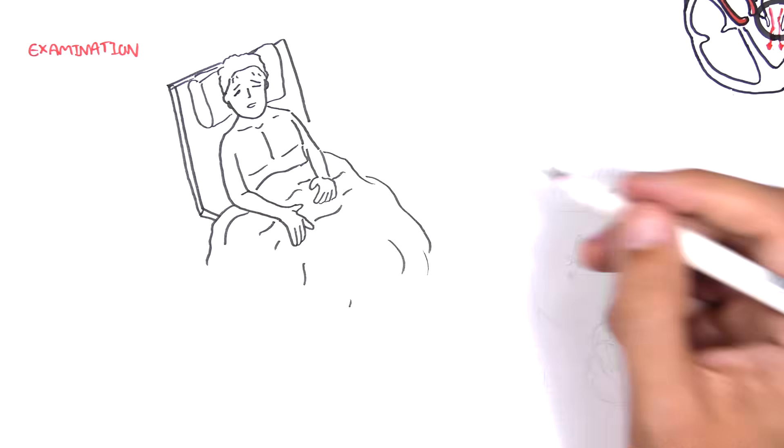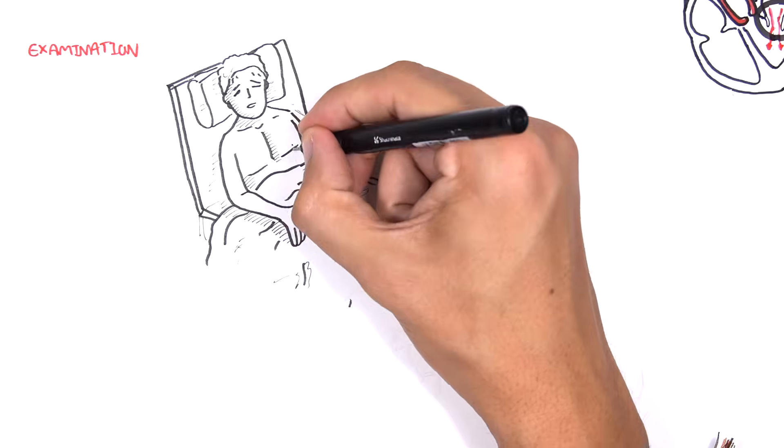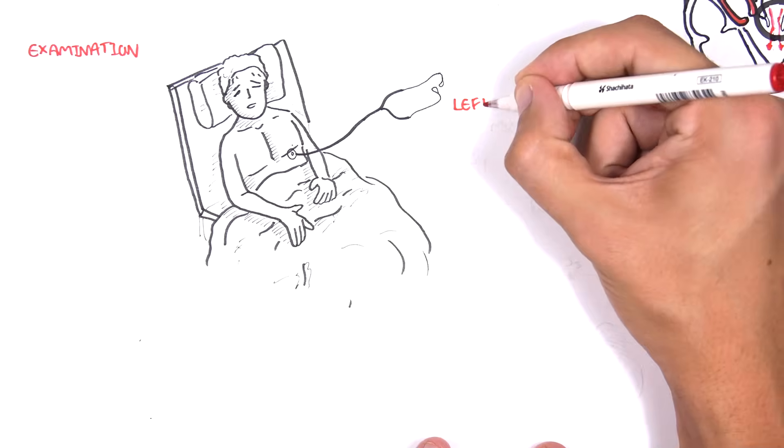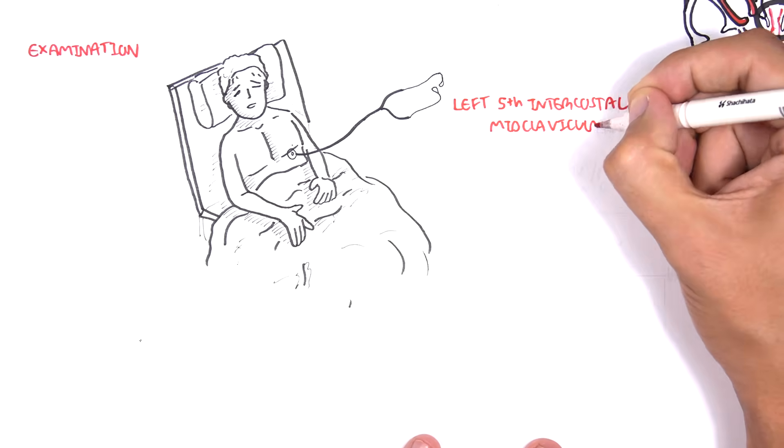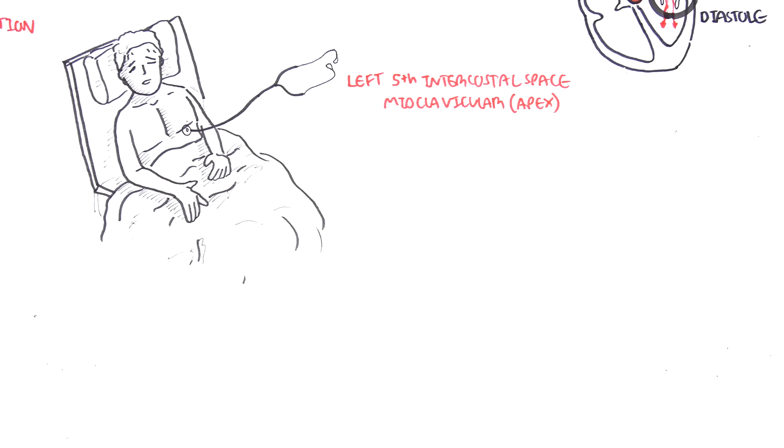On cardiovascular examination, patients with mitral regurgitation, we listen to the left fifth intercostal space mid-clavicular. This area is also known as the apex, where the apex of the heart is located.